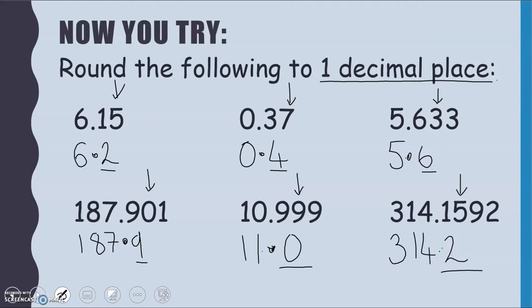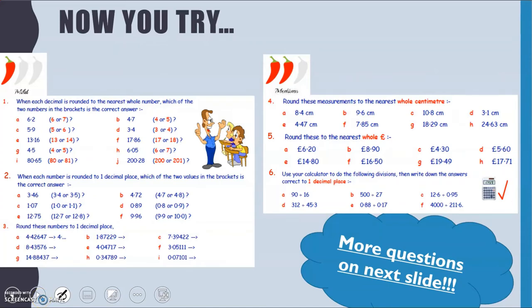Last one. So 314.159, 8 tells me to round up. So that's going to be 314.2. So each time here, I have got one digit after my decimal point because it is to one decimal place.